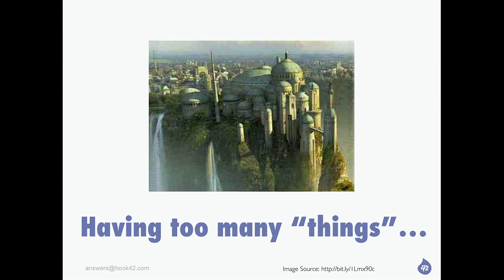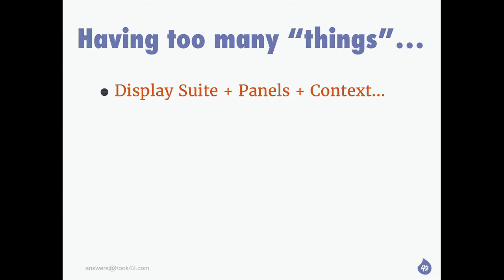The last big bucket I'm going to talk about is having too many things — that's a technical term. One of the things might be just having too many architecture components: trying that one and that one and that one and putting them all together. A common example is using Display Suite with Panels and Context plus core blocks all at once. Think about your architecture, try to minimize, try to standardize, and don't go too crazy.